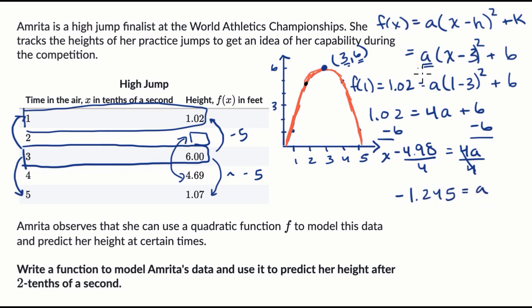And so now we know what our function looks like. We get our model. It's f of x is equal to negative 1.245 times x minus three squared plus six.